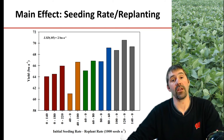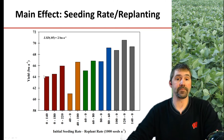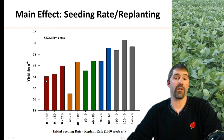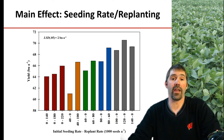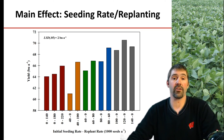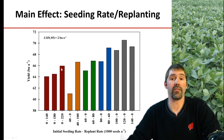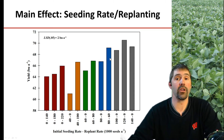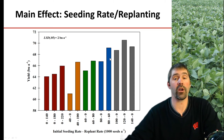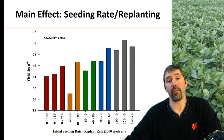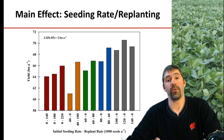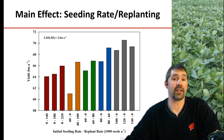Under no circumstance do we encourage growers to go out, regardless of what that stand is, hit it with a field cultivator and restart their seeding process from scratch. The main reason for that is, first of all, you have to increase your seeding rate. Here we've dropped 220,000 seeds per acre and we still have a significant yield loss compared to if we were to drop say 120 or 140 earlier, primarily because of such a huge planting date effect that growers are taking significant yield loss.